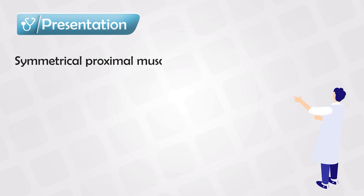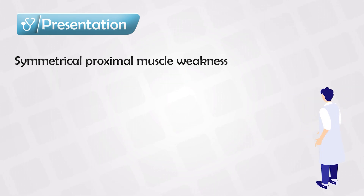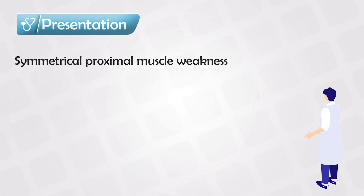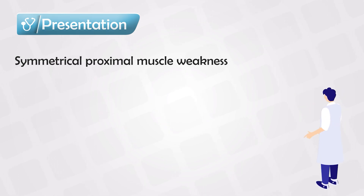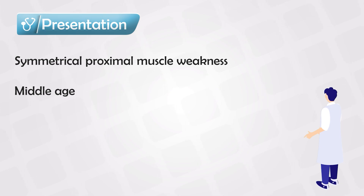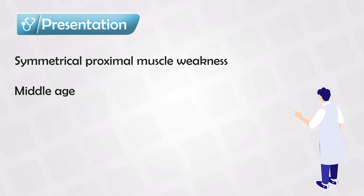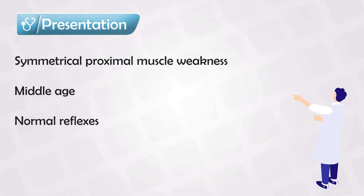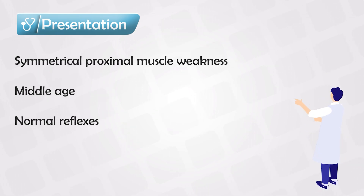Polymyositis is characterized by symmetrical proximal muscle weakness. This mainly involves the thighs and the shoulders. The patient will present with progressive weakness and pain in these areas. It typically presents in middle-aged patients, and the patient will say something like difficulty climbing the stairs or getting out of the chair. Keep in mind that this condition involves the muscles themselves, so the nerves are preserved and the reflexes are preserved.